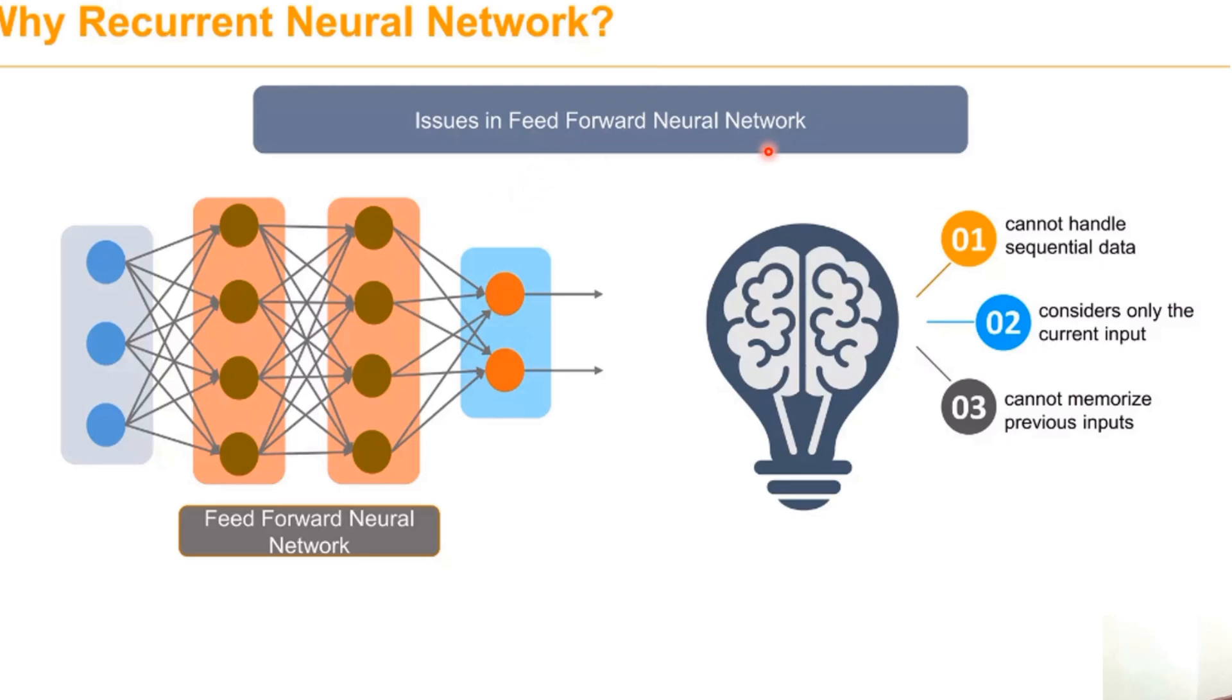The main issues in feed-forward networks are: it can't handle sequential data, it considers only the present input, and it can't memorize previous inputs.